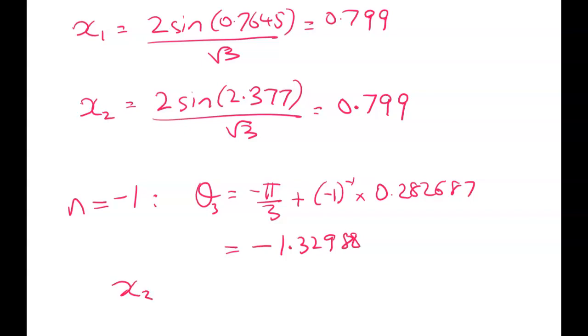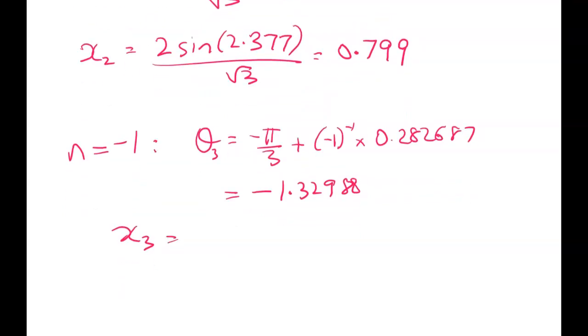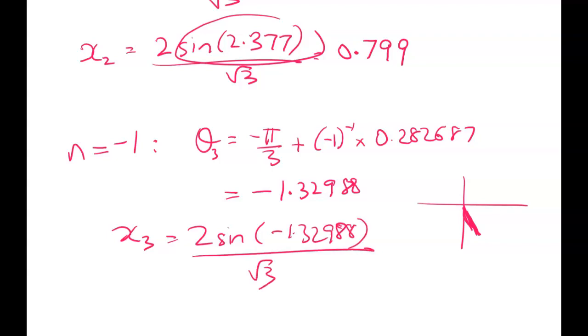And we know that that's going to generate me a unique x value, right, because I'm putting it in here. And I'm in, when I do that, let's see which quadrant we're in. I'm down here, right, and so the sine is going to be negative. So x3 is equal to sine of this, oops, wrong number, 2 sine negative 1.32988 divided by root 3. And that generates negative 1.12.